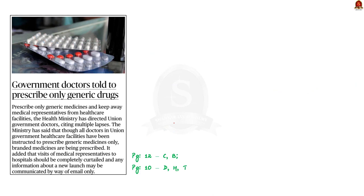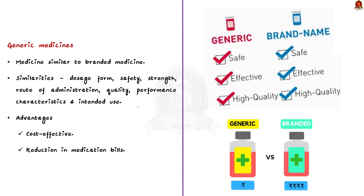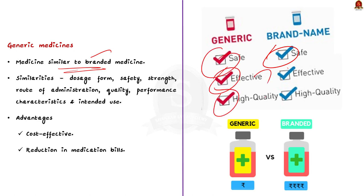According to the article, the health ministry has directed union government doctors to prescribe only generic medicines, and also directed that visits of medical representatives to hospitals should be curtailed completely. A generic drug is a medication created to be similar to an already marketed brand name drug — similar in dosage form, safety, strength, route of administration, quality, performance characteristics and intended use. Generic medicines are much cheaper than their branded counterparts and will significantly help people reduce their medication bills.